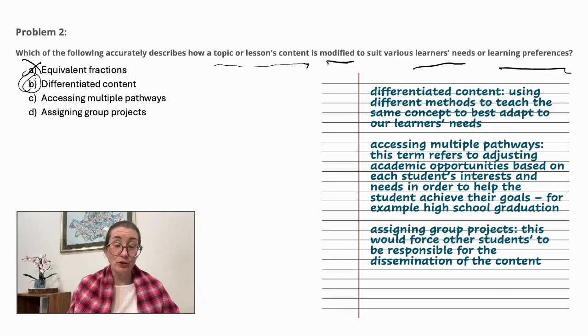But let us look at the other two just to explain each of them. Accessing multiple pathways. This term refers to adjusting academic opportunities based on each student's interests and needs in order to help the student achieve their goals. For example, high school graduation. And D. Assigning group projects. This would force other students to be responsible for the dissemination of content. So that would not be a modification to suit a learner's need. So we can confidently say it's B. Differentiated content.